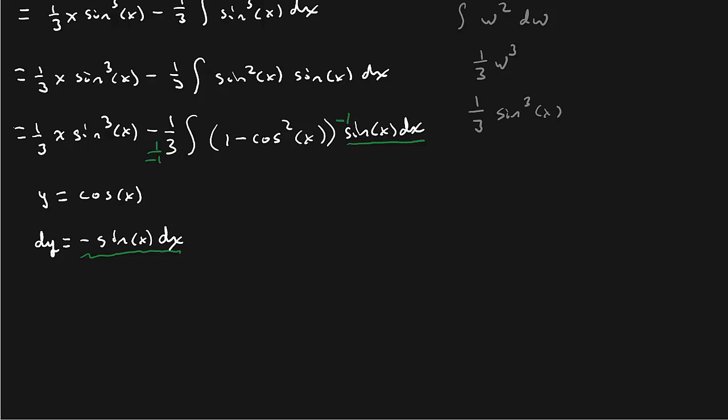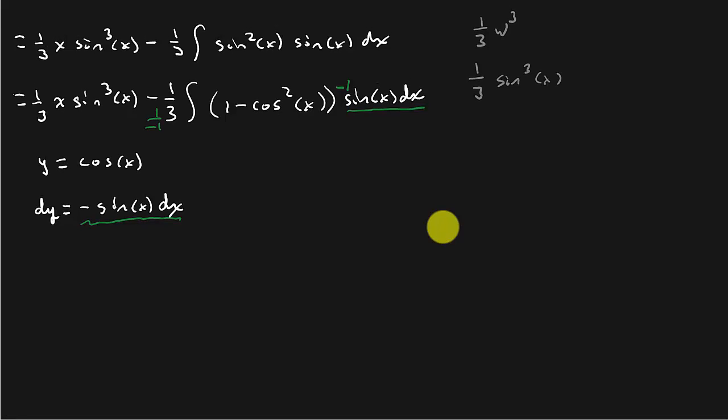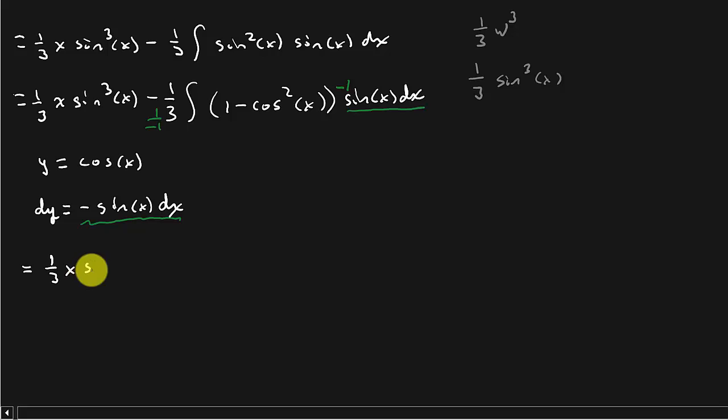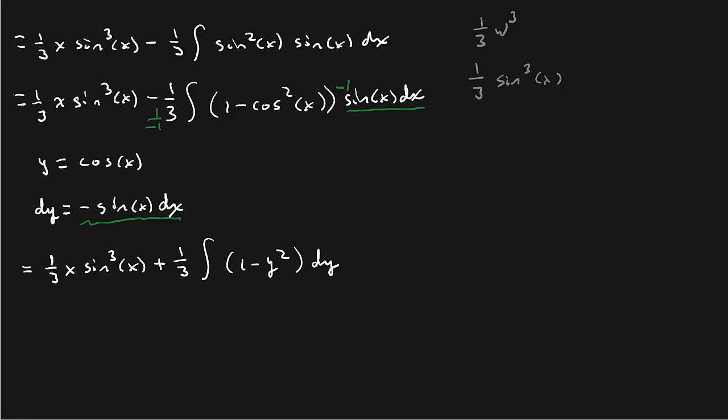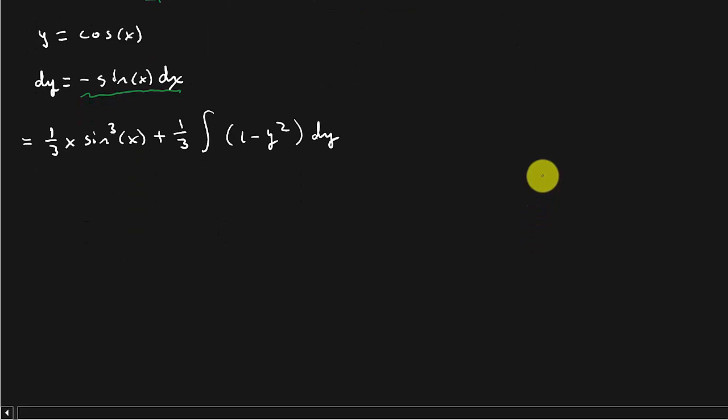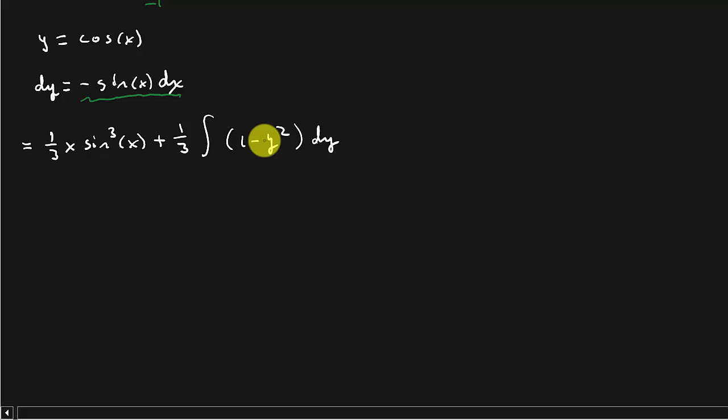And so this is going to give me 1 third x sine cubed x. And then the negative and negative make it a positive. 1 third integral. 1 minus y squared dy. Alright. And now I can integrate this thing.